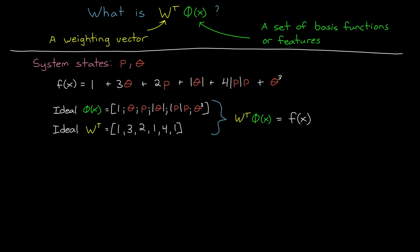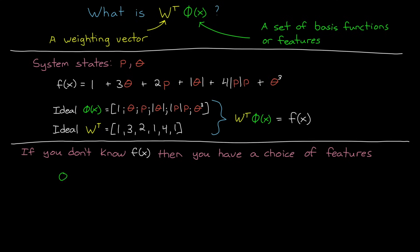And the combination of these two would perfectly represent the unknown variations. However, more often than not, we don't know what the model of F of X looks like. So we don't know what the ideal features are. We could simply choose to model phi as the states of the system plus a bias. And then, in this case, we'd essentially be making a linear approximation of this nonlinear function. And that's still better than nothing, but it won't be perfect.